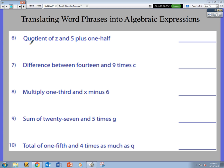First thing, we have to know some terminology. So for the first one here, I read quotient of z and 5 plus one-half. First thing I need to know is quotient. And in my mind, quotient means to divide. And what am I dividing? z and 5.